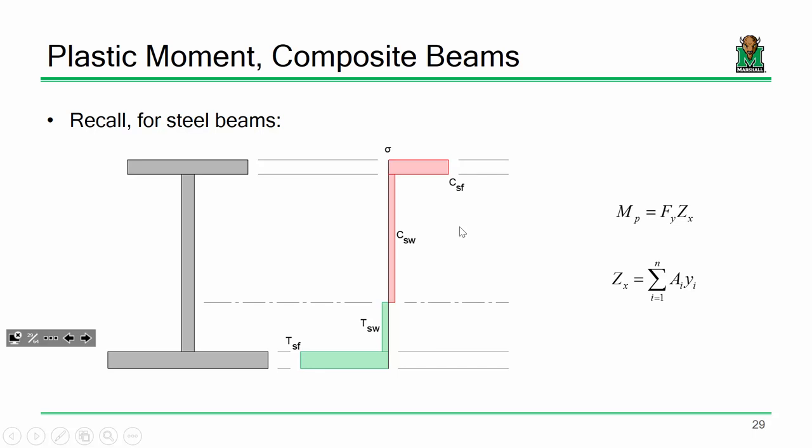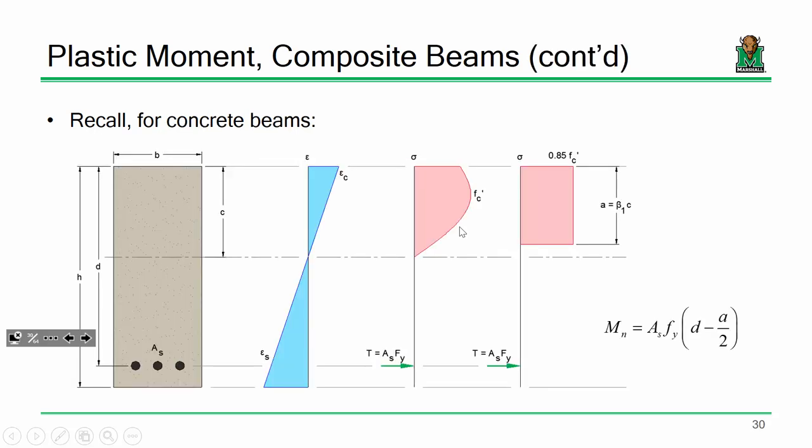We looked at the maximum capacity last time. We looked at the maximum flexural capacity of just a steel beam by itself, and we recognize that we have a term for that: MP, the plastic moment capacity, FY times ZX. Find the point where the compression equals tension, find moment arms, sum moments. Same story with reinforced concrete design — that's a very common philosophy if you're doing an analysis of a cross section to determine its flexural capacity.